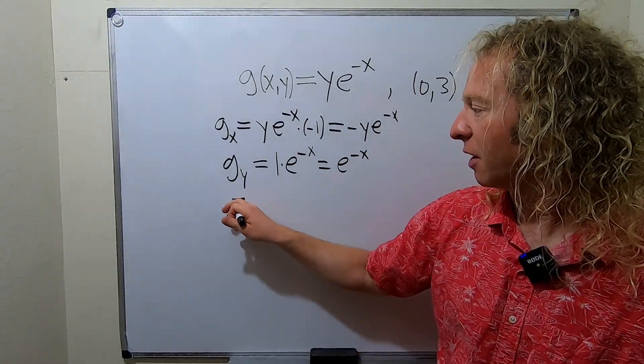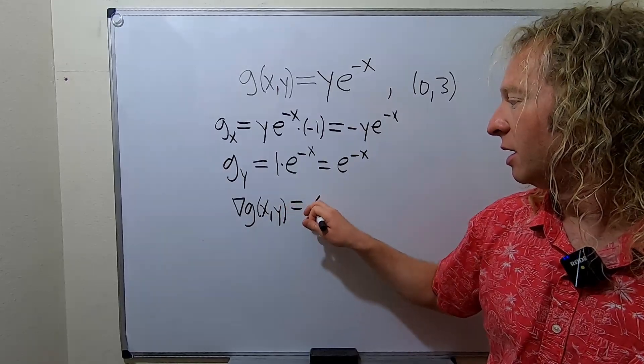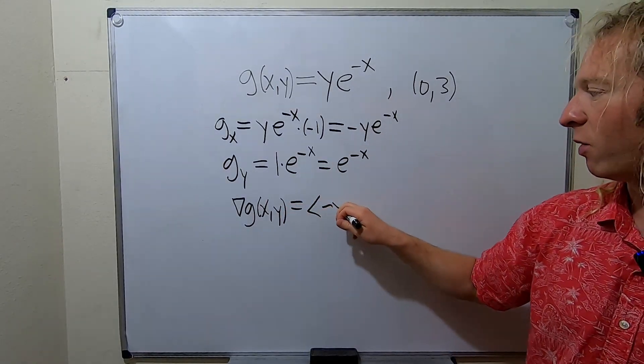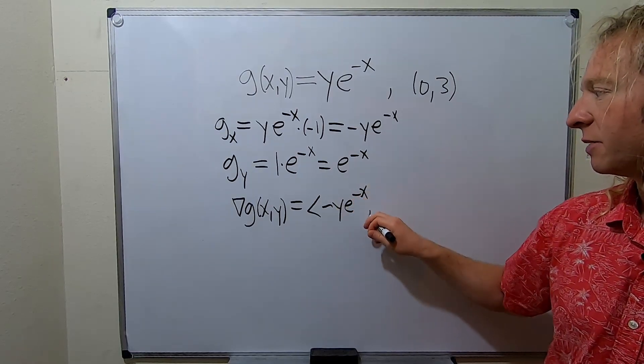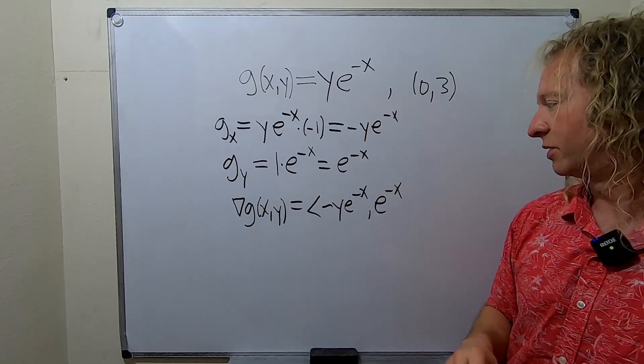Okay so the gradient of g at x y is going to be the vector of partial derivatives. So first you put this one here, negative y e to the negative x, and then this one goes here, e to the negative x.